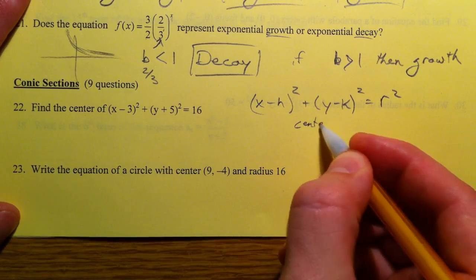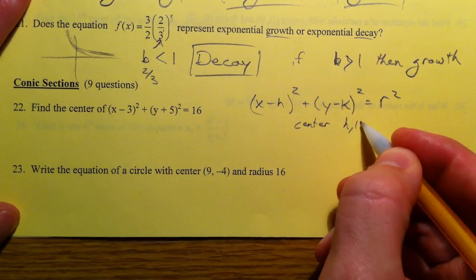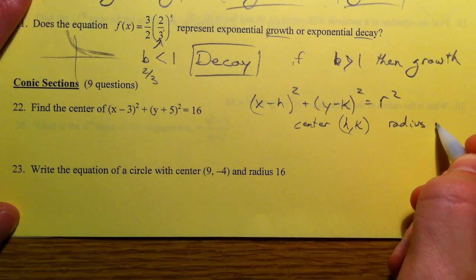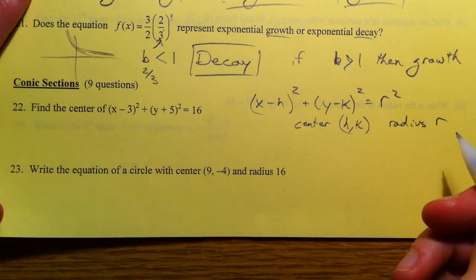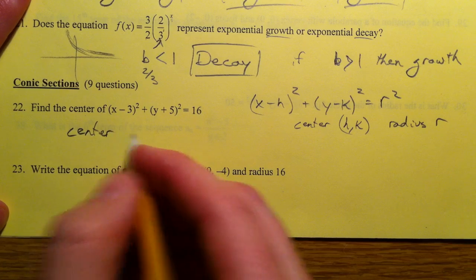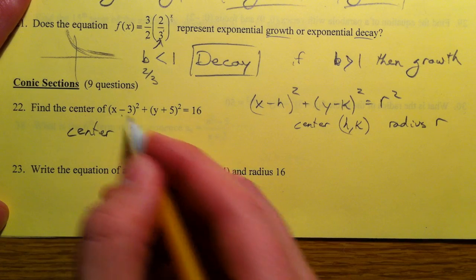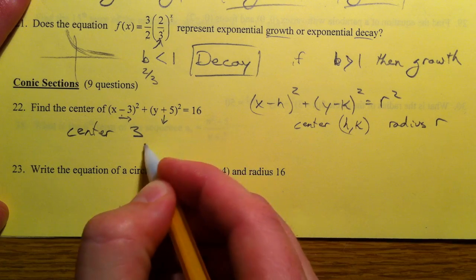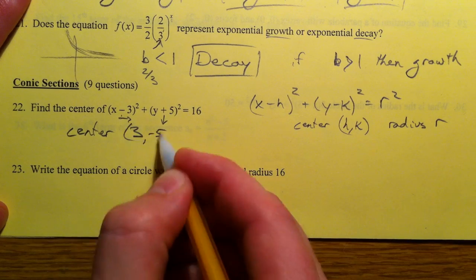Center is hk and radius is r. And so everything with conic sections is going to be squared. So the center is the opposite of 3 because it moved it to the right 3 and down 5, so 3 negative 5.